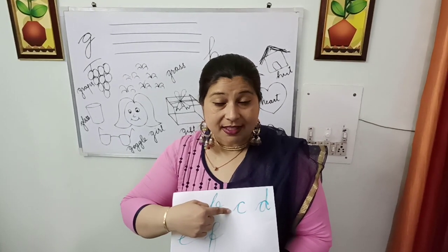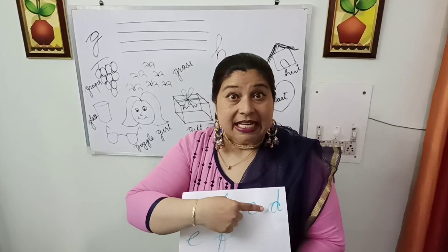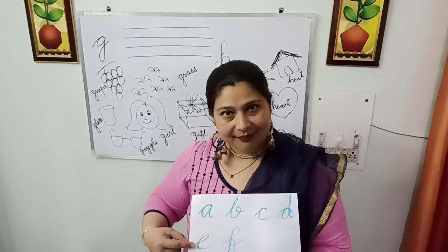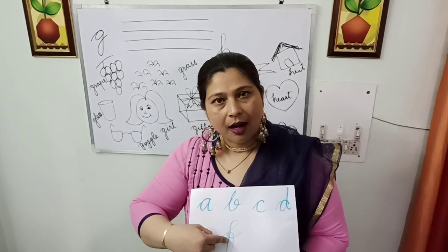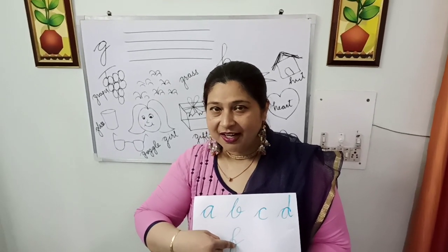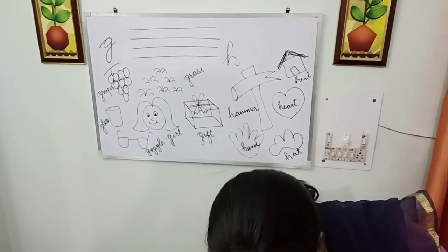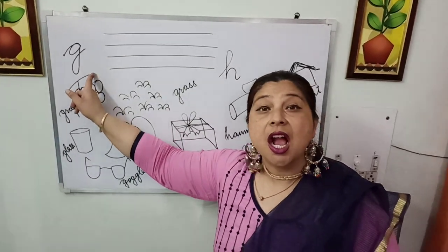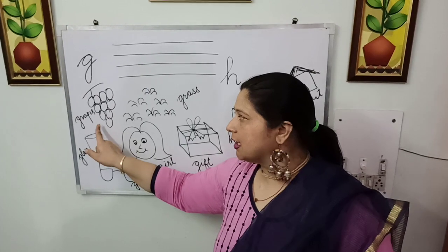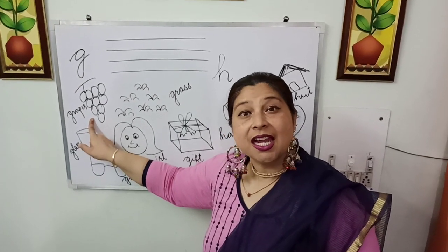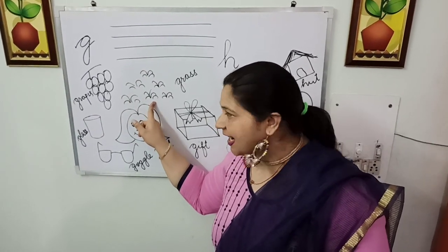Everyone speak with me. If you remember, we have done 'ph' for frog and fish. Right now we are switching over to the next phonic sound, that is called 'guh'. This is 'guh'. 'Guh' says grapes. 'Guh' — grapes. 'Guh' — grass.